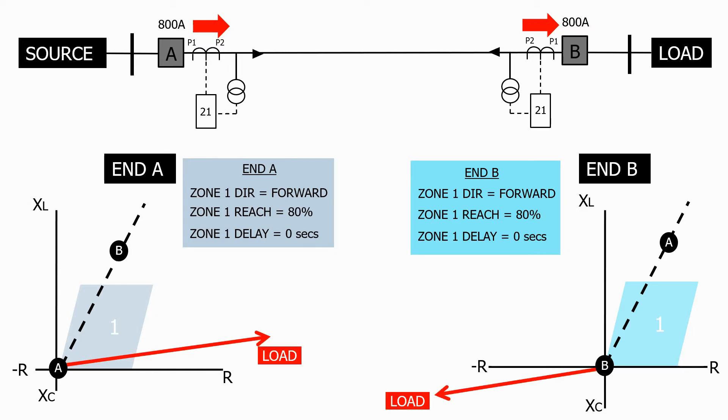Let's now add a fault halfway down the protected line. As this is a solid system, fault current now flows in from both ends of the feeder. The fault is at 50% of the line length and therefore it falls well within the zone 1 impedance characteristic for end A and end B.